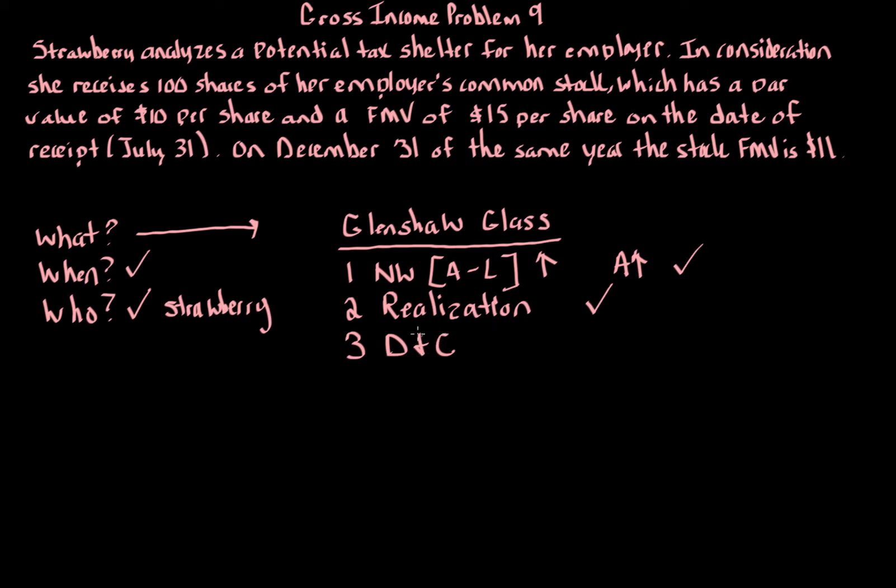Finally, there must be complete dominion and control. With respect to dominion and control, are there any strings attached to this? Can strawberry not sell the stock or do anything with the stock? Maybe if this was like a stock option that couldn't be transferred or some stock that could not be sold, you have to keep it for a certain time, it's vested. That would be an example of dominion and control, but that's not an issue here. Strawberry gets these shares and can do as she sees fit.